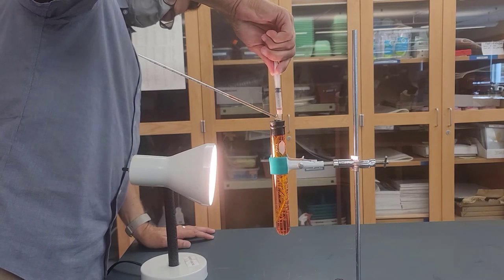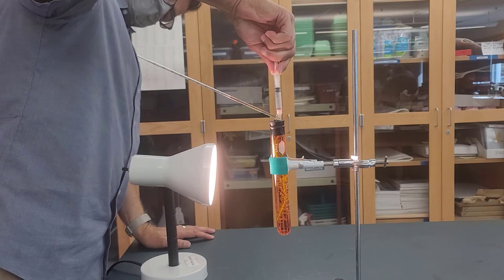So our dependent variable is going to be the change in fluid level in our photosynthesis setup. I'm going to explain the parts as we go here and let's get started.